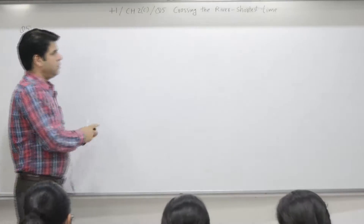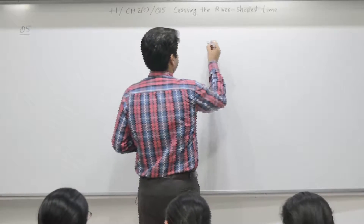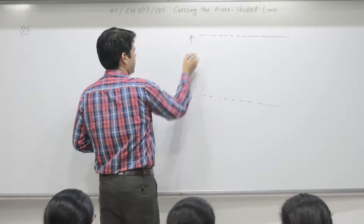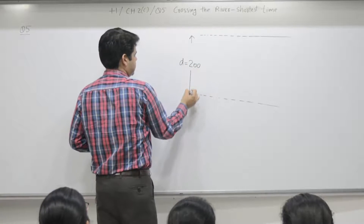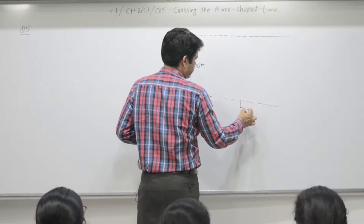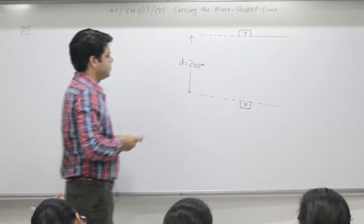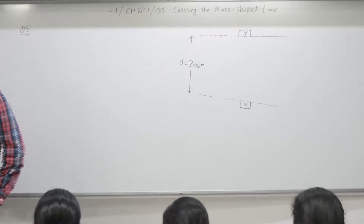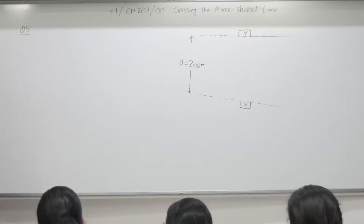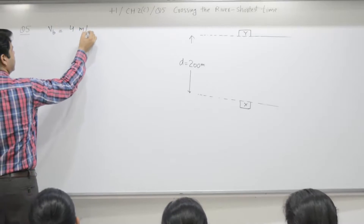Crossing the river — the problem is there is a river of width d, as an example 200 meters. You are at station X on one side, you want to reach to the other side Y. Going through the various parameters: what is the boat speed? Boat speed Vb is given as 4 meters per second.